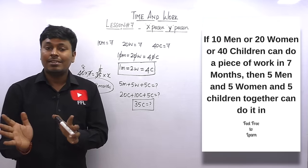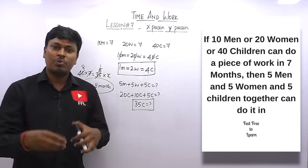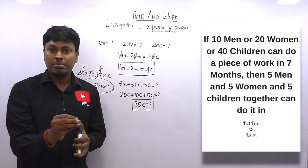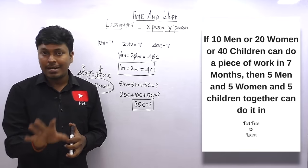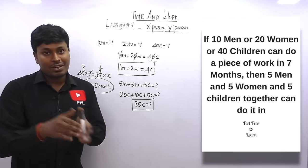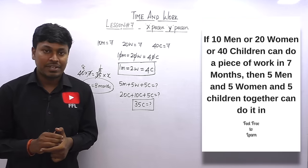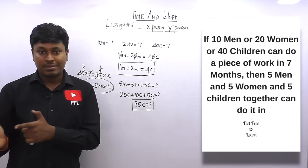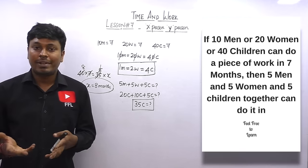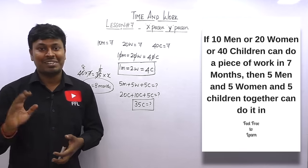In this video, we solved four questions based on the 'x person and y person' concept in Time and Work — one of the most important topics for aptitude exams. After watching, practice more questions from books to decide whether the equation method or shortcut method suits each problem. If you found this helpful, please share it with friends preparing for competitive exams or campus interviews. Thank you so much — bye!